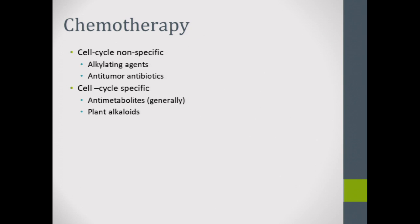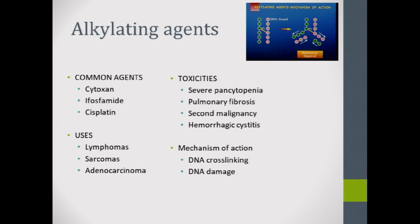Briefly, a laundry list of chemotherapy agents. There are cell cycle non-specific agents — the alkylating agents and antitumor antibiotics — and cell cycle specific agents — the antimetabolites and plant alkaloids. Some of this is memorized right before the test, but side effects of chemo are very commonly tested.